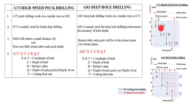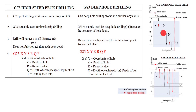I already taught G73 in the last video, but I will explain again here. The tool feeds into the depth of cut Q, then it retracts to a small predetermined distance D — this is the chip-breaking process. Then it feeds to the next depth of cut, retracts again to the small predetermined distance D. This process is repeated until the final Z depth is reached.